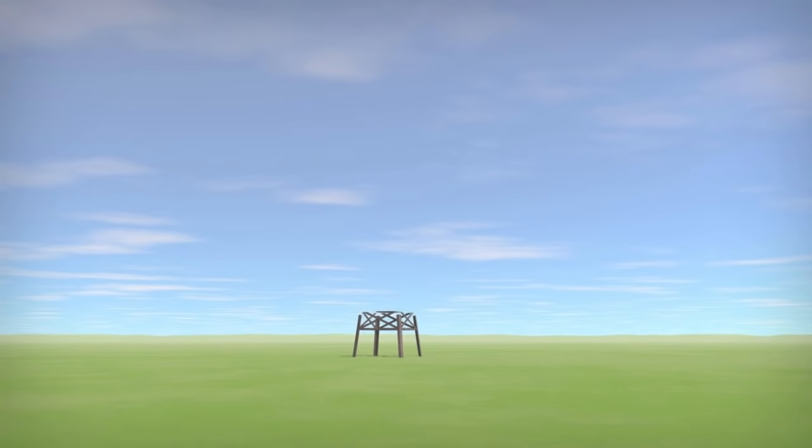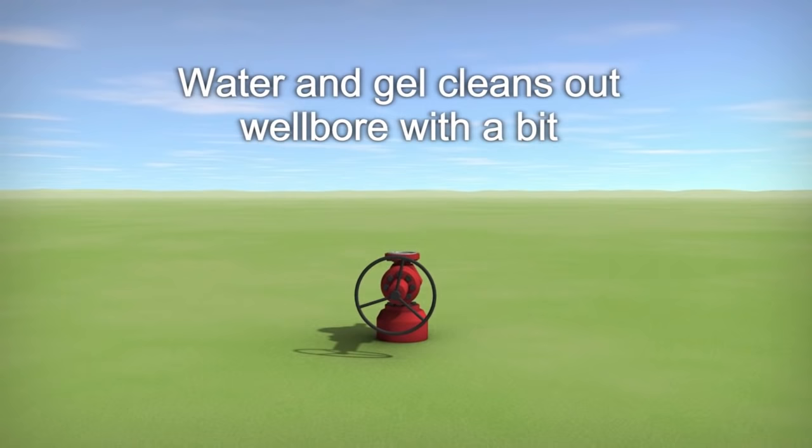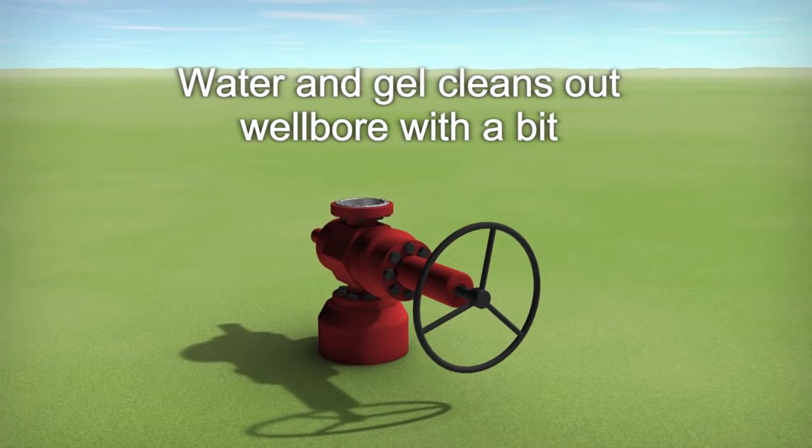Completion begins with the installation of a valve at the surface. Then, a water and gel mixture is used to clean out the wellbore with a bit via a completion rig and tubing in preparation for the perforating run.